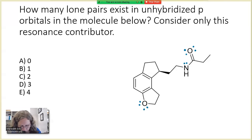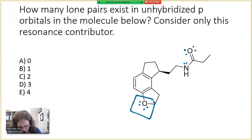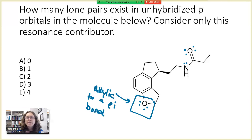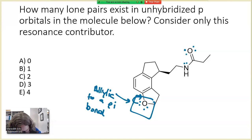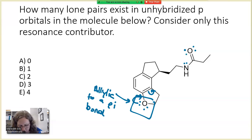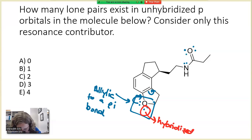Let's take a look at the oxygen right down here. That oxygen has two lone pairs, and one lone pair is allylic to a pi bond — that's one of our key patterns. Now, this oxygen atom has two bonds and two lone pairs, so only one lone pair can participate in resonance. That means one of the lone pairs here is in a hybridized orbital, whereas the other lone pair is unhybridized, in an unhybridized p orbital.